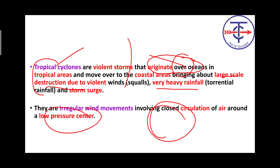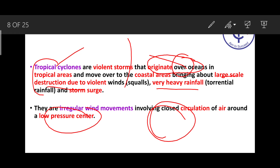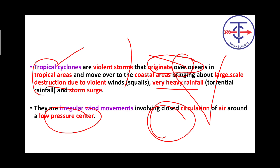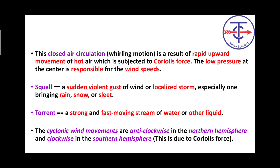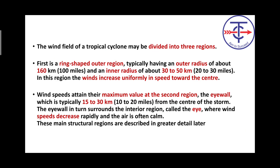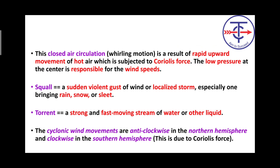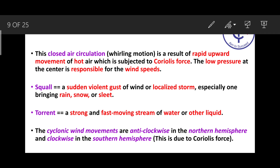Tropical cyclone — why does it form over water? The logic: cyclone will never come to Punjab or Haryana — it only comes to coastal states in India, because it forms over water. It is a closed air circulation. It is a result of rapid upward movement of hot air. When low pressure forms, it is because warm air is rising upward — that upward movement creates low pressure, and air from all sides rushes inward.